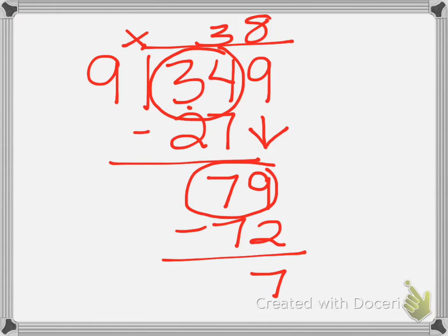Now I ask myself, will 9 go into 7? And they should all say no, so we now have a remainder of 7. So our final quotient on this problem is 38 remainder 7.